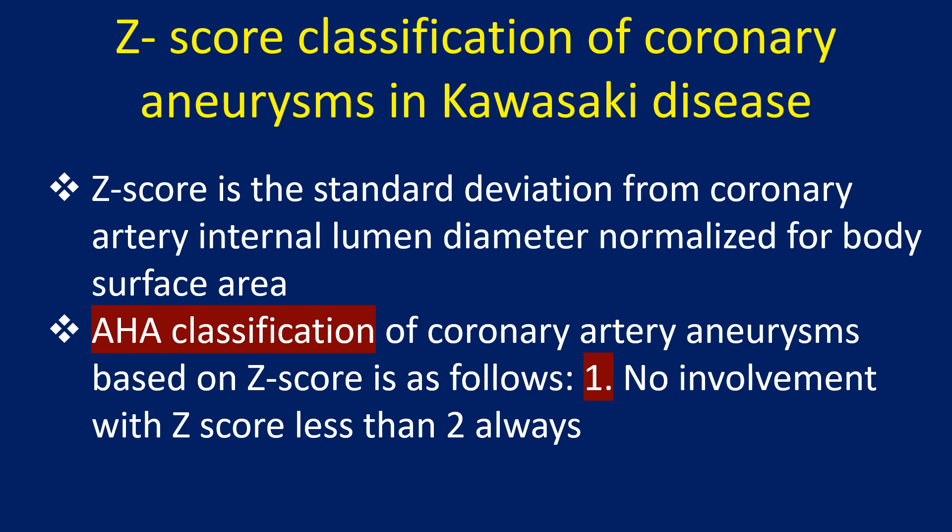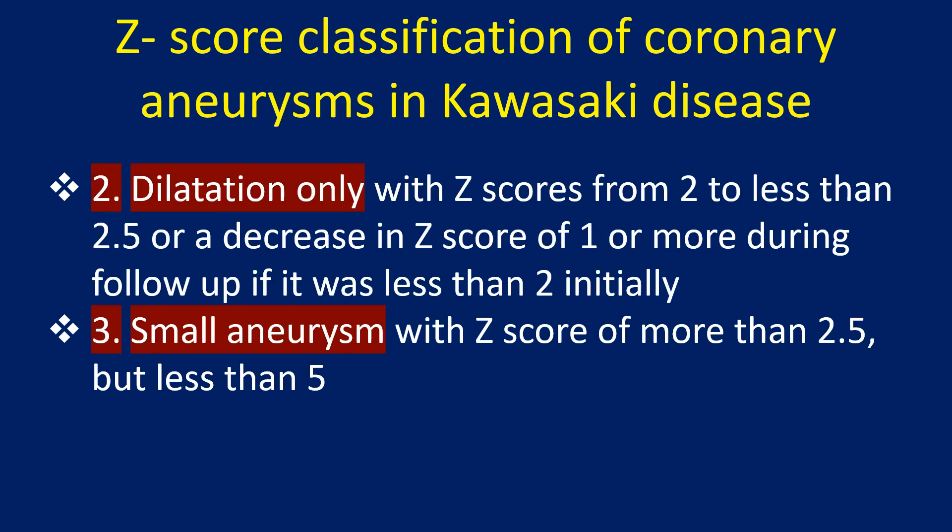The AHA classification of coronary artery aneurysms based on SED score is as follows. First, no involvement, with SED score less than 2 always. Second, dilatation only, with SED scores from 2 to less than 2.5, or a decrease in SED score of 1 or more during follow-up if it was less than 2 initially. Third, small aneurysms with SED score of more than 2.5 but less than 5.